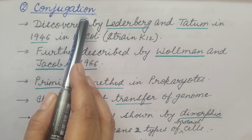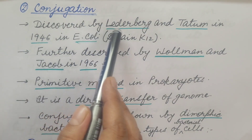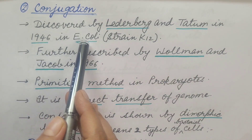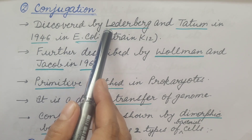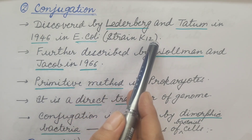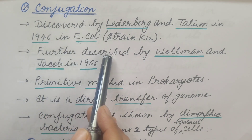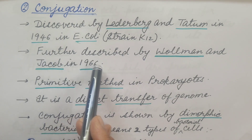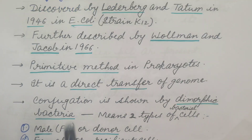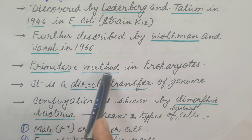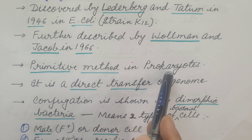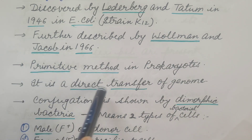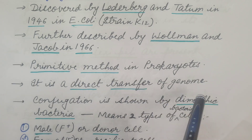The second method is conjugation. It was discovered by Lederberg and Tatum in 1946 in E. coli, strain K-12. It was further described by Wollman and Jacob in 1966. It is the primitive method of parasexual reproduction in prokaryotes and it involves direct transfer of genome.